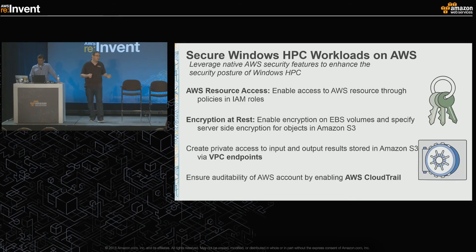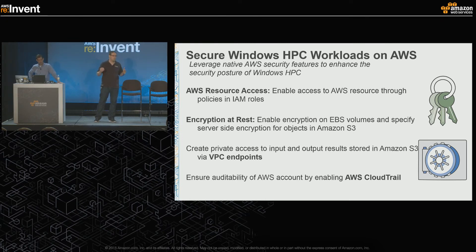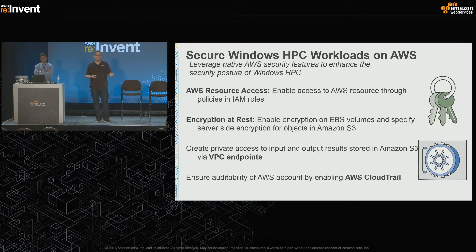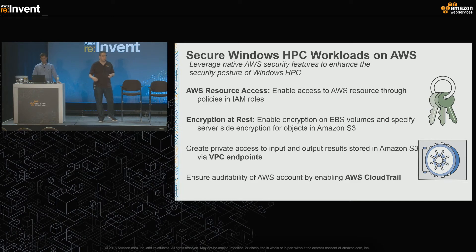Now for best practices. Number one priority: be secure. First, you want resource access permissions - control exactly who can start a cluster, what can be done to it, and who can read data stored on Amazon S3. You also want to encrypt your data. Using EBS and Amazon S3, you can have end-to-end encryption applied on the host, with everything encrypted in transit and at rest. For most encryption options, it's free and it's a one-click option - really simple to activate. You also want full control over your network, which we just covered with Amazon VPC.